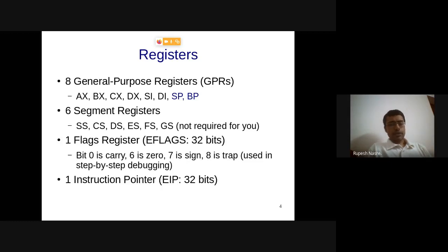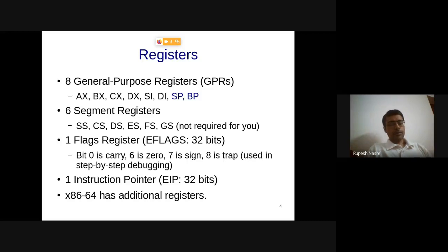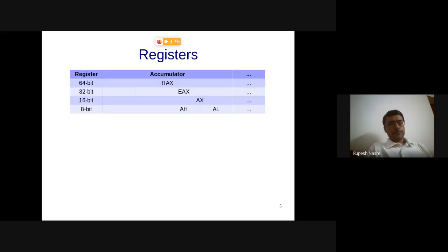The instruction pointer (EIP) indicates which instruction is being executed. There are additional registers, some reserved as scratch registers, some visible to programmers. By and large, we are going to use AX, BX, CX, and the general-purpose registers.